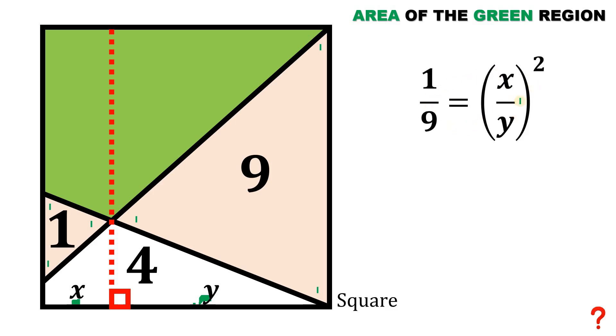Now we can solve for the value of x over y. Just get the square root on both sides. We have 1 over 3 equals x over y. So we can say that y equals 3 times x. We can replace this y with 3x like this.